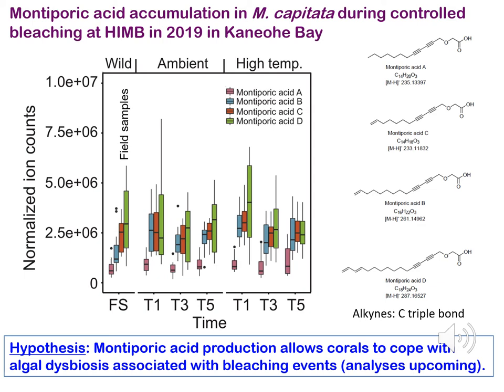Analysis of monopuric acids in field samples, as well as the control and heat treatment at T1, T3, and T5, show that these metabolites accumulate to high amounts in the coral holobiont and are not simply present in the eggs. We also find that monopuric acid D in particular is highly expressed throughout all of the experiments. These are interesting on two levels: monopuric acid is known to be an antimicrobial, so it may play a role in the thermal stress response during dysbiosis, and it may also suppress photosynthesis of the algal symbiont — an important function under thermal stress.